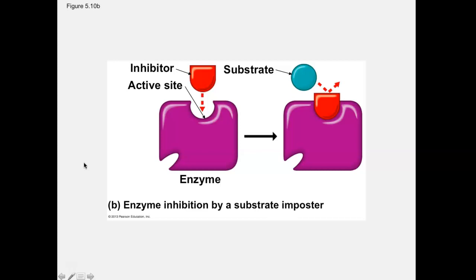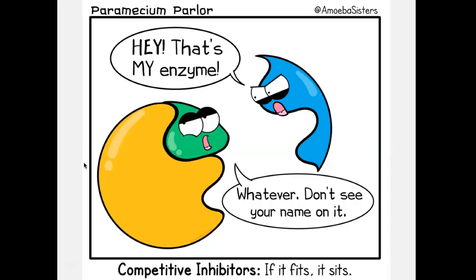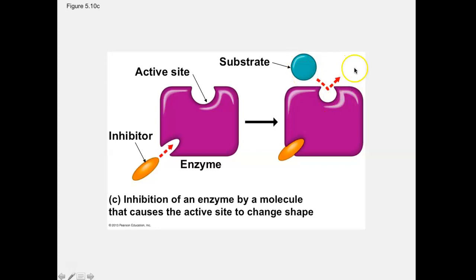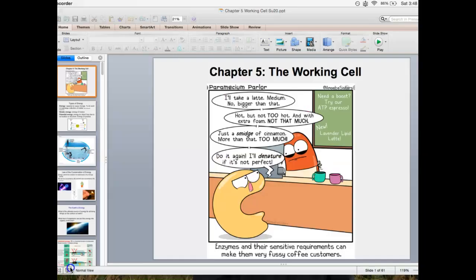There's also non-competitive inhibition, where a molecule binds to the allosteric site of an enzyme. The allosteric site is a different area — not the active site — where another type of inhibitor can bind. When this inhibitor fits in the allosteric site, the active site changes shape — it shrinks — and the substrate can no longer bind, stopping the reaction. This is different from competitive inhibition because we're not competing with the substrate; we're binding to a different area called the allosteric site.